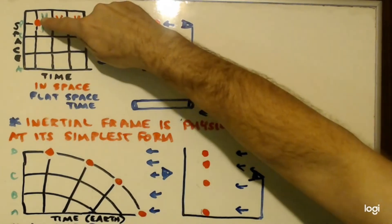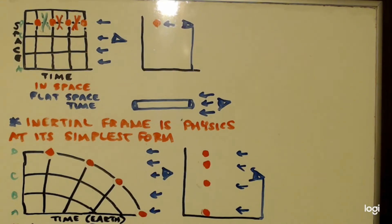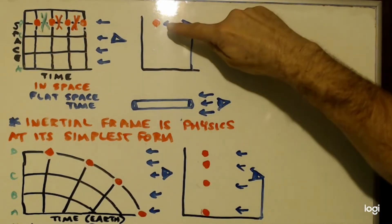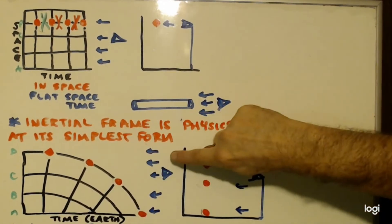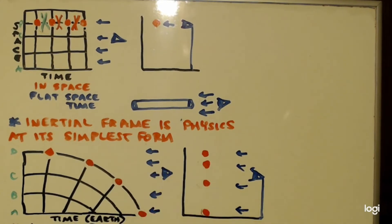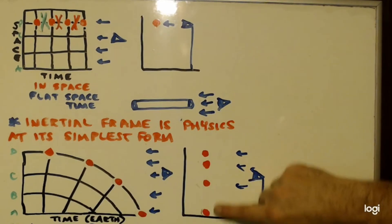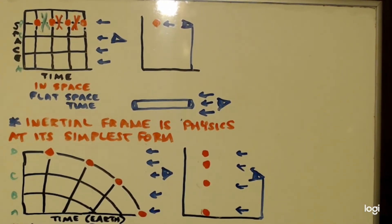I want you to look — the ball: the first second is here, second second, third second, fourth second. Now I want you to see: if your eye was looking at it, what would you see? Because you can't see the time dimension — your eye is going to be a foot in front of it at each second. You move through time just like the ball does. So what would you perceive if you took the time dimension out? The first second it would be here, then here, then here, then here. So what does that look like? It looks like it's falling, doesn't it?